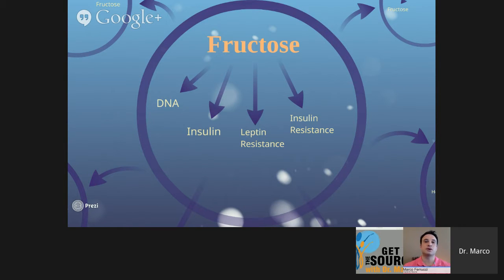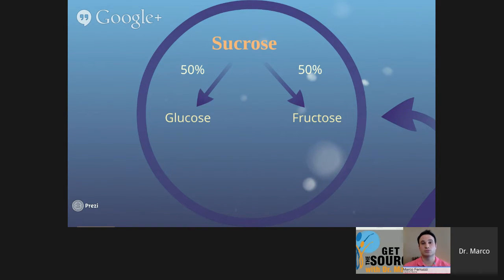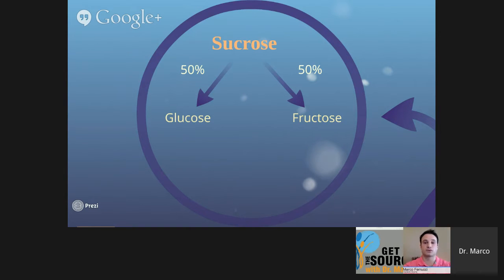Before we continue, we need to understand how our body gets fructose into it. We've got to break it down into sucrose and high fructose corn syrup. Sucrose is your basic table sugar. When you break sucrose down, it is 50% glucose and 50% fructose. This is the sugar most people are familiar with — the sugar in your coffee, in most carbohydrates, in most processed foods like cookies and cakes. Sucrose is a big part of how fructose comes into the body.